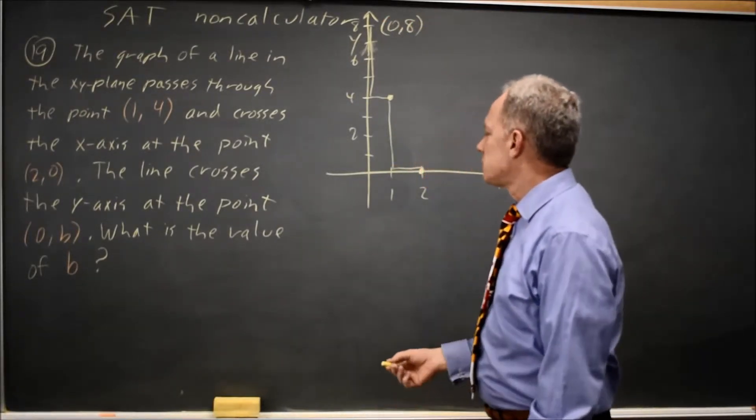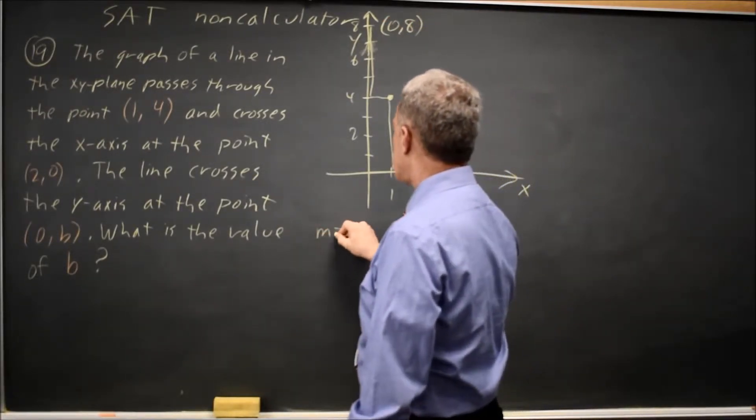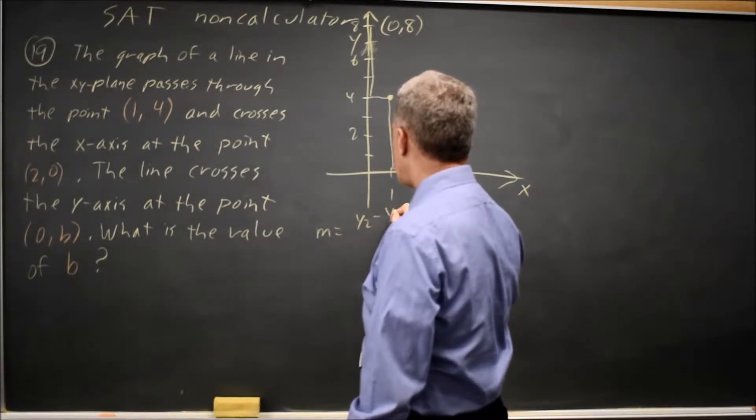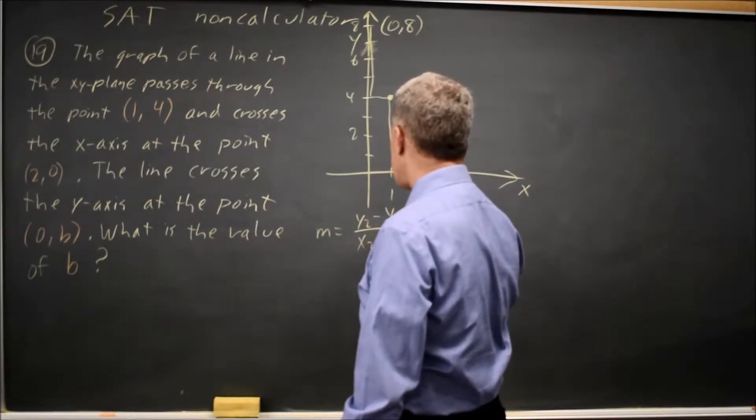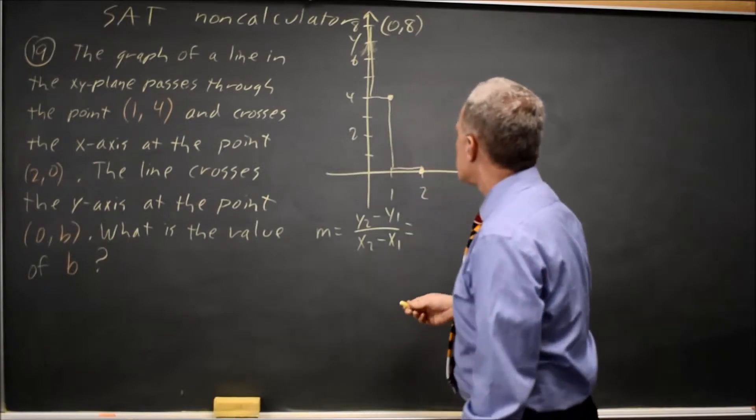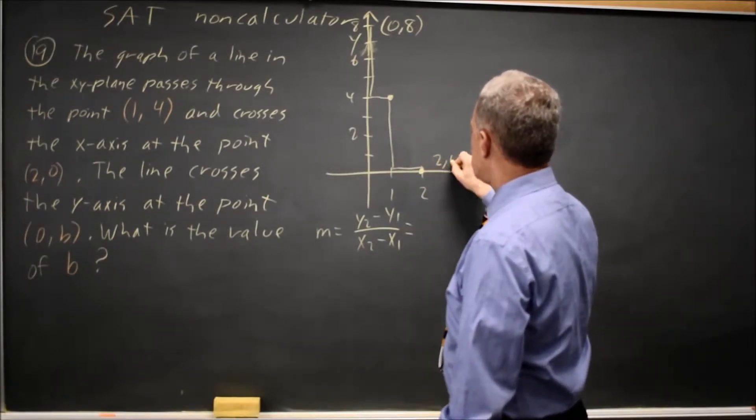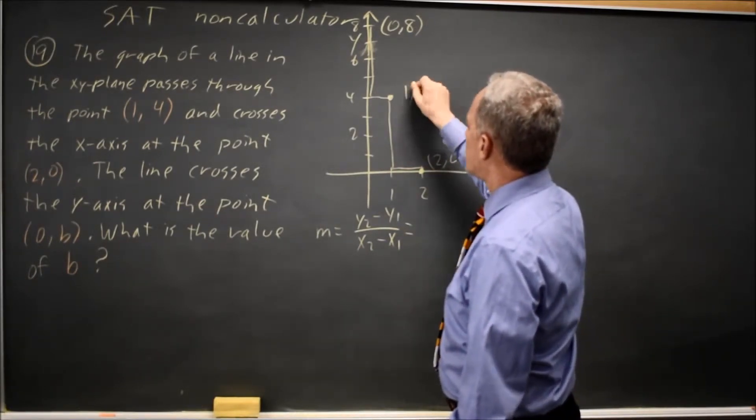Or I can formally find the slope. My slope equals y2 minus y1 over x2 minus x1. The y-coordinates, this is 2, 0 and 1, 4.